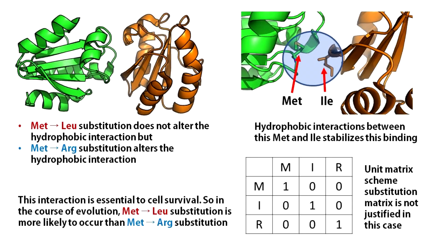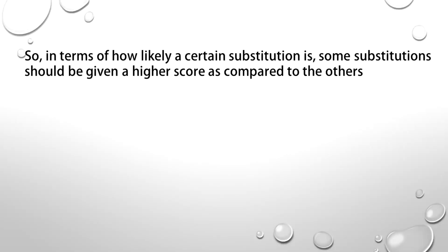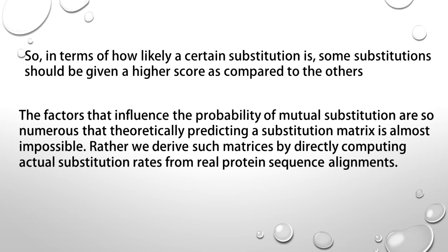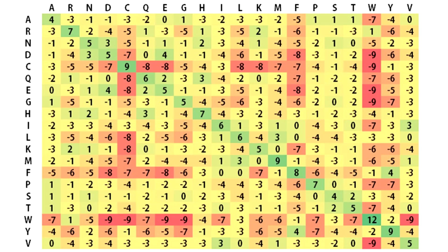In other words, amino acid substitutions are too complex to be modeled using a scoring scheme of 1 for a match and 0 for a mismatch. So in terms of how likely a certain substitution is, some substitutions should be given a higher score as compared to the others. The factors that influence the probability of mutual substitution are so numerous that theoretically predicting a substitution matrix is almost impossible. Rather, we derive such matrices by directly computing the actual substitution rates from real protein sequence alignments. Percent accepted mutations or point accepted mutations or PAM is one such example.